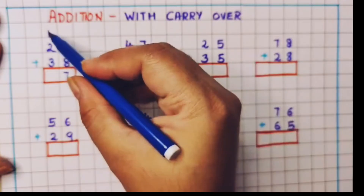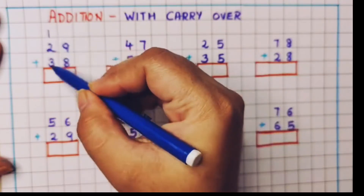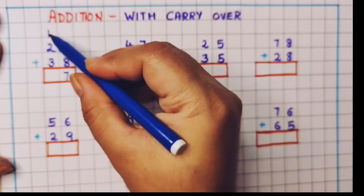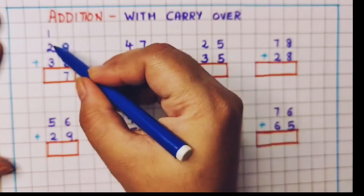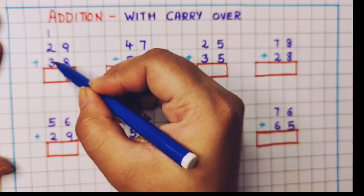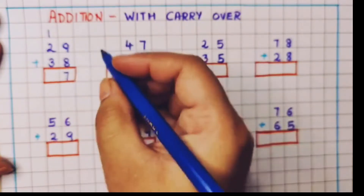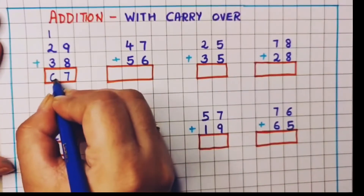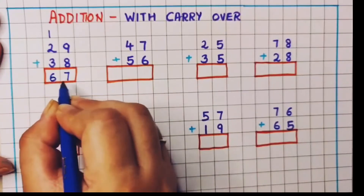Now we have to do the addition of these digits. 1 plus 2 is 3 and 3 plus 3 is 6. So the answer is 67.